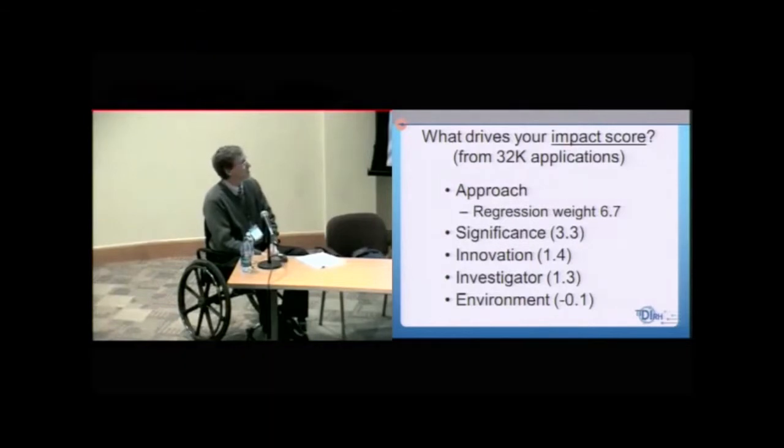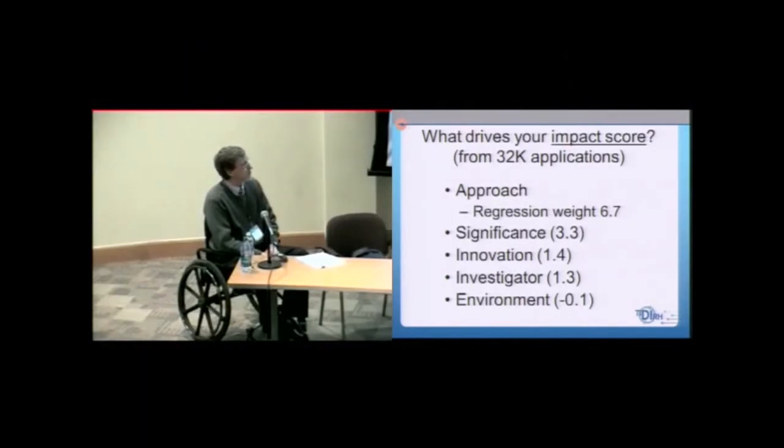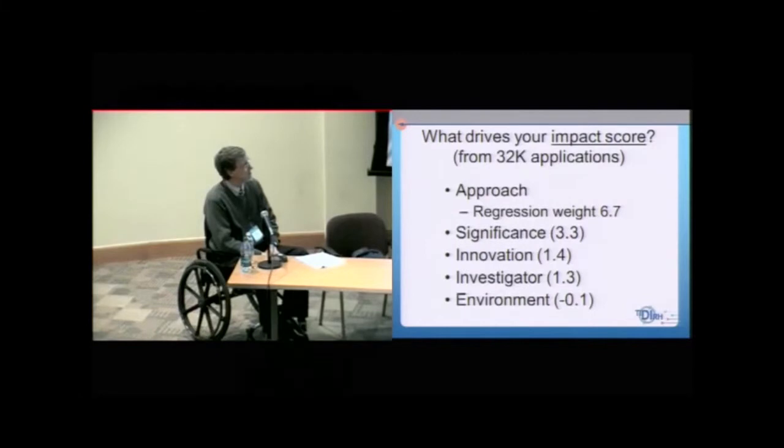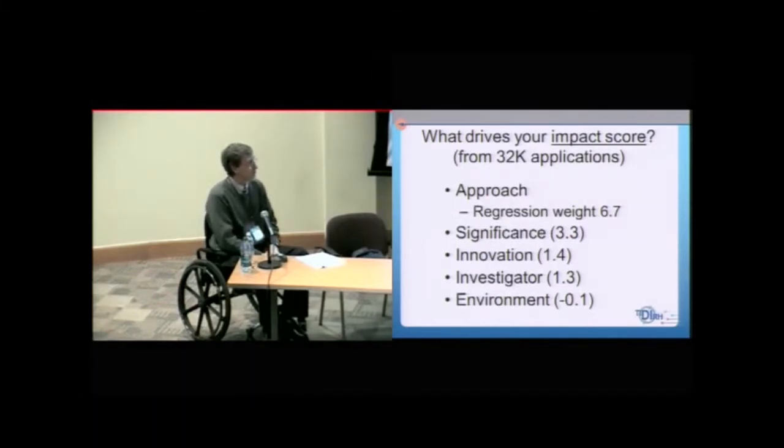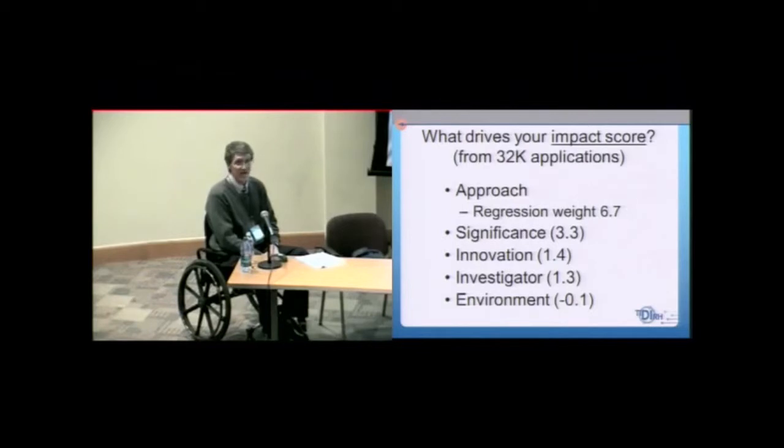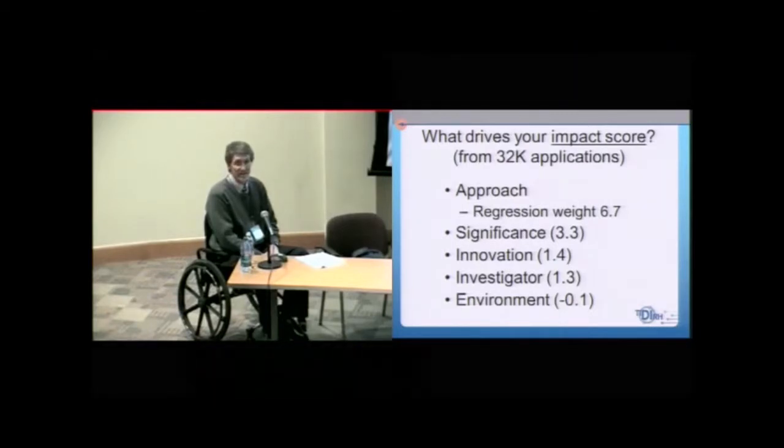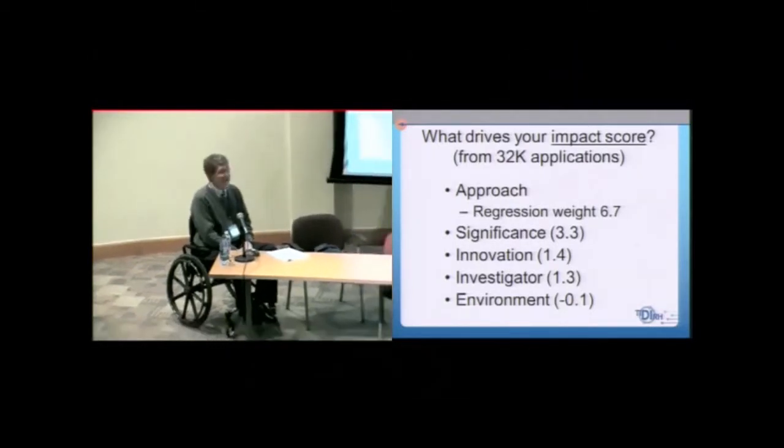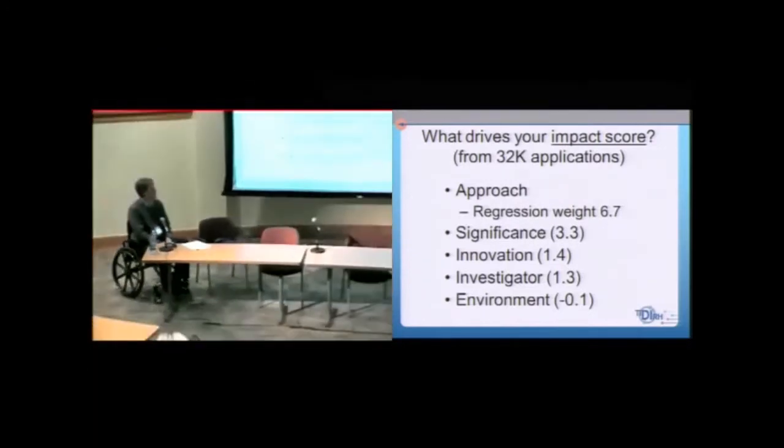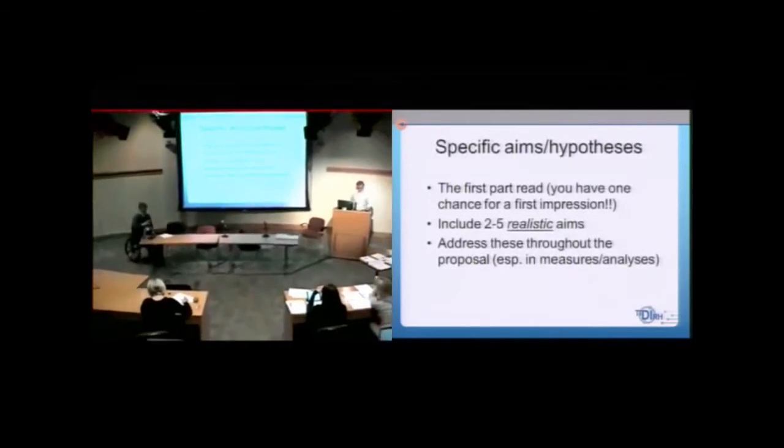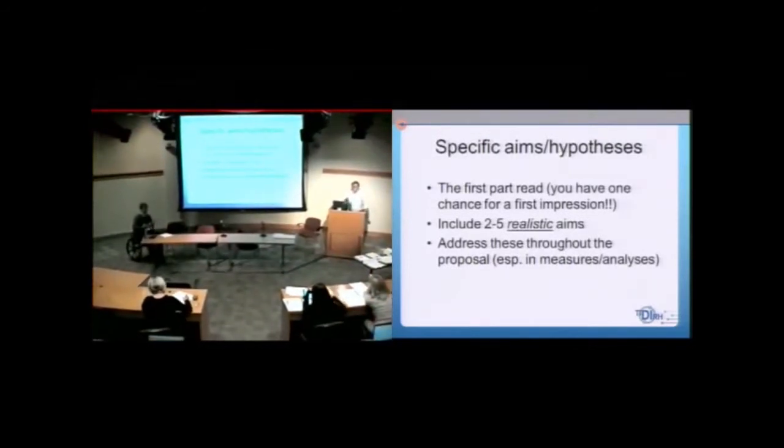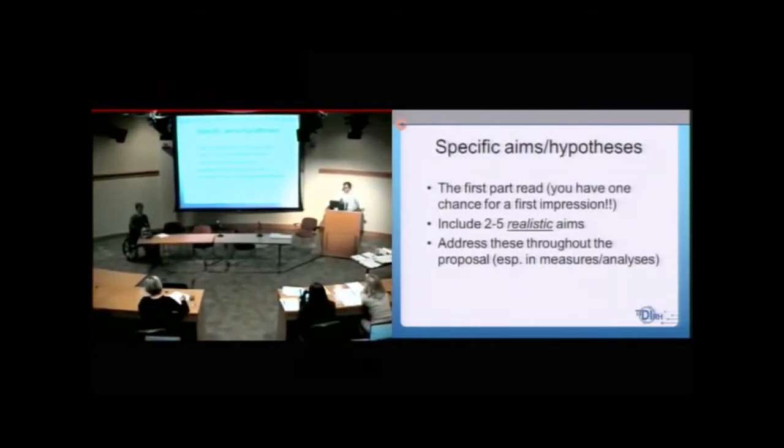The key take-home message there is if you're writing like an increasing number of applications that are 12 pages or 6 pages long, and you have to cut something, what's the last thing you cut? Methods. Methods are the last thing that you cut. Because that's what I always say, not described enough. Yeah, and it's often kind of the last thing you write because the front sections, and so we often see like the significance being really long, and that's usually a mistake.